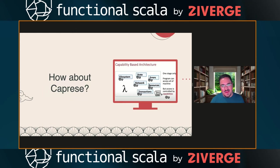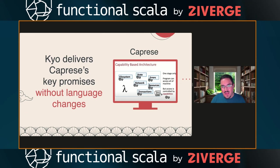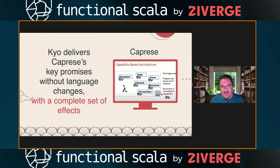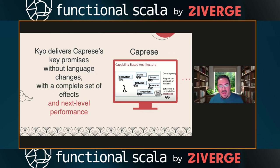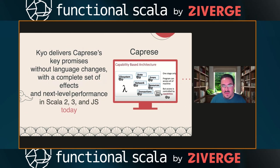I wanted to address a question you might be thinking: doesn't this look very similar to what Caprese is promising? Yes — Kyo delivers Caprese's key promises, but without any language changes, with a complete set of effects, available in Scala 2, Scala 3, and Scala.js, with next-level performance, and available today. You can go to the website right now and start using Kyo.